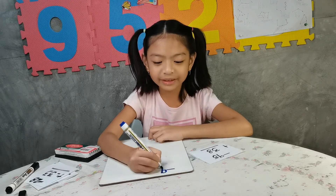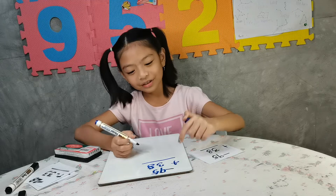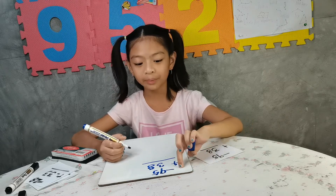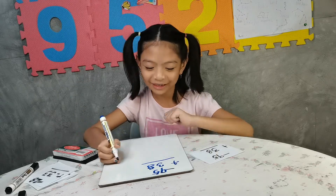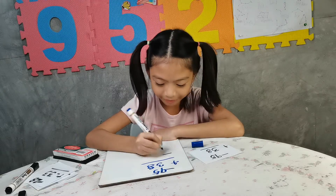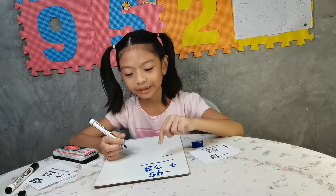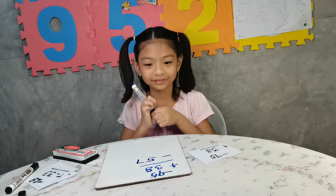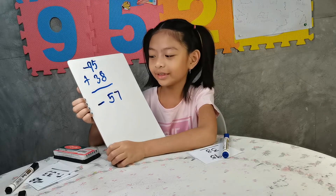Next: negative 95 plus 38. The sign isn't the same — it's a negative number plus a positive number — so we follow the sign of the higher number. The higher number is 95 and it has a negative sign. Instead of addition, we use subtraction: 95 minus 38. So negative 95 plus 38 equals negative 57.